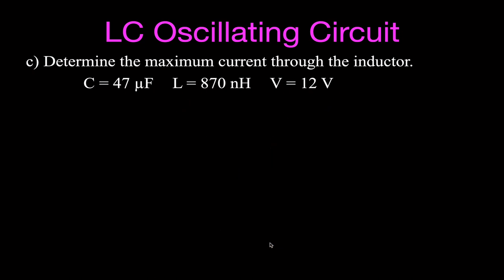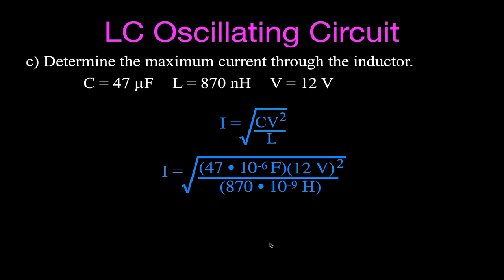Plugging in the values: C = 47×10⁻⁶ F, V = 12 volts squared, and L = 870×10⁻⁹ H. Don't forget to square the voltage. Calculating that gives a maximum current of 88.2 amperes, or approximately 88 amperes — that's the current when the capacitor is fully discharged and the magnetic field in the inductor is at its maximum.